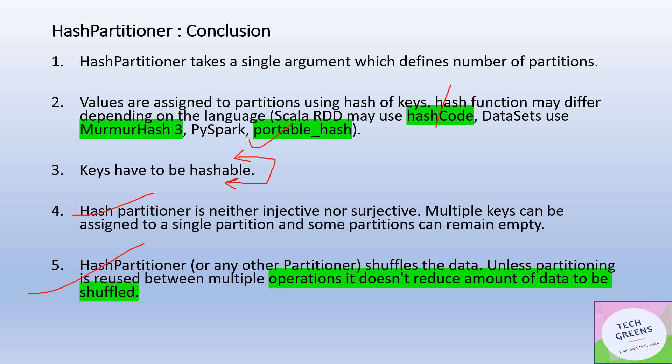An important concept: whether using Hash Partitioner or any partitioner, it will definitely shuffle data across nodes unless you are reusing the same partitioning between different operations and transformations. If you want to reduce shuffle, you need to be smart about reusing the same hash partitioner — as shown in videos about joins without shuffle. Otherwise, shuffle will always occur and the amount of shuffled data will not be reduced. That's it for this topic on Hash Partitioner in Apache Spark. Thanks for watching, have a good day!